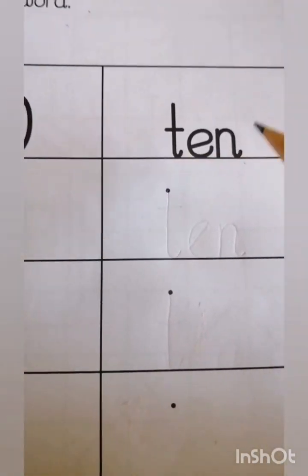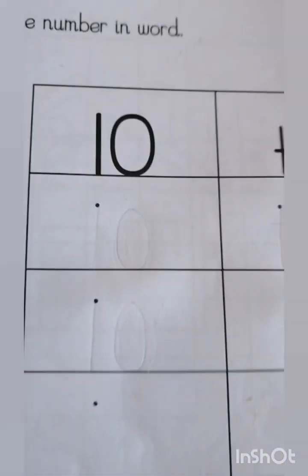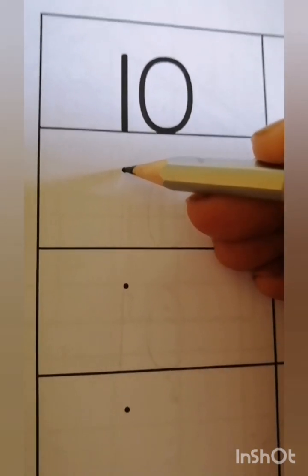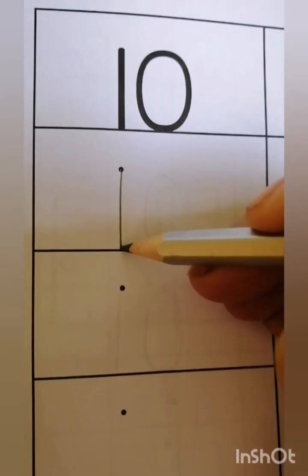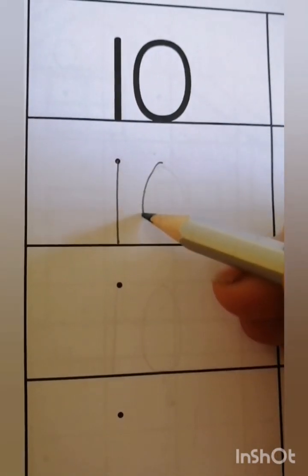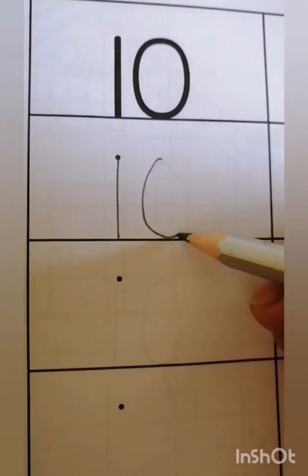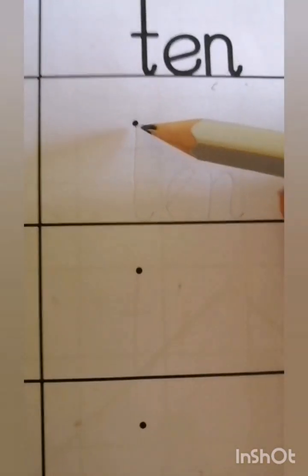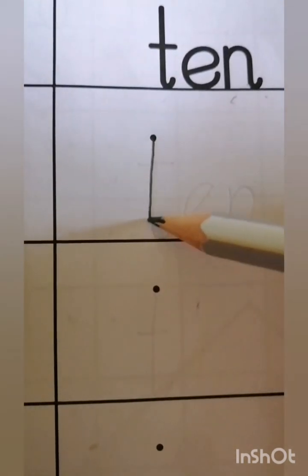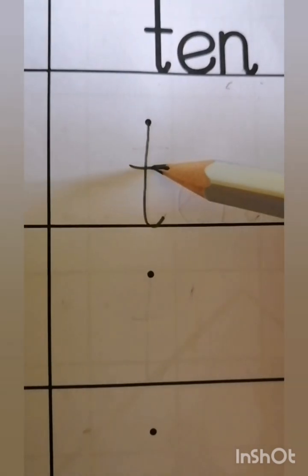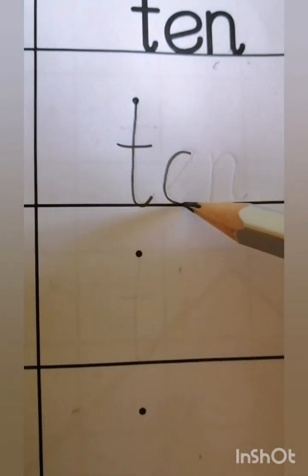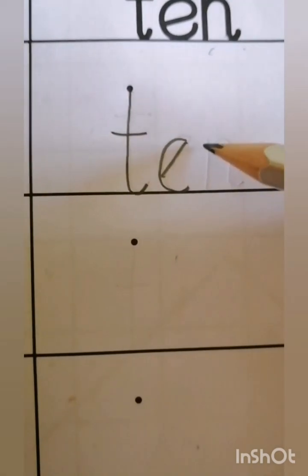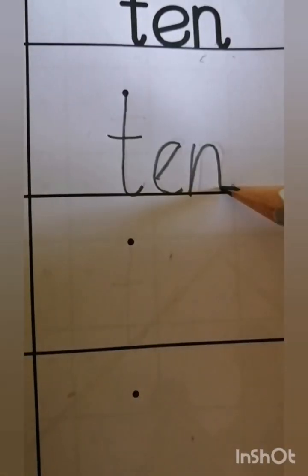This is a number and this is a number name — the spelling of number t-e-n, 10. Now start practice. Put your pencil on the dot, go down — standing line — and must touch the line. It's 1 and 0, touch the line. 1 and 0 makes 10. Put your pencil on the dot — standing line, loop, sleeping line — t-e-n, 10.